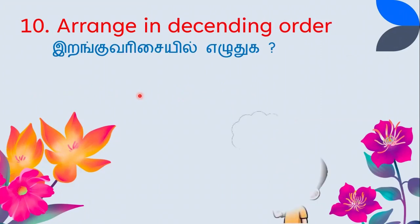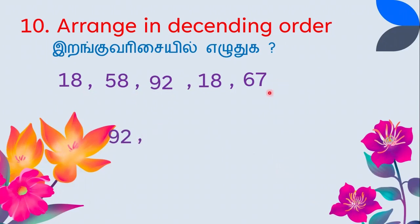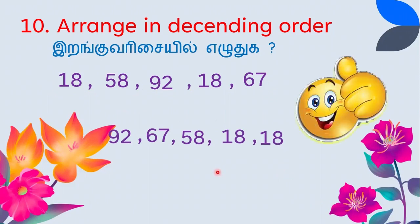Arrange in descending order: 18, 58, 92, 18, and 67. Note that 18 appears twice — equal numbers are treated the same. From big to small using tens place: 92 first, then 67, then 58, then 18, then 18. Descending order: 92, 67, 58, 18, 18.